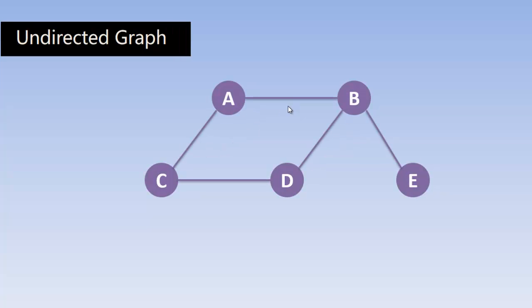In an undirected graph, there won't be any directed edges between the nodes. There is just a line. This means you can move from A to B or B to A in any way you like.